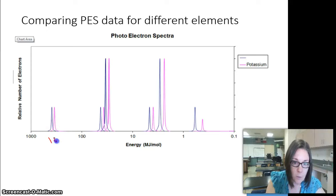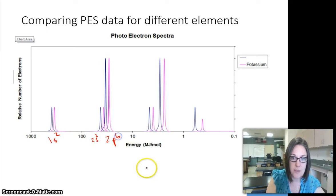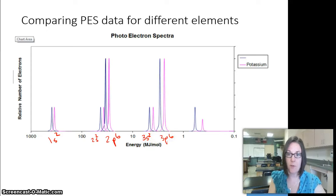This would be our 1S2. These two little peaks would be our 2S2, and then the two taller peaks would be the 2P6. These would be 3S2, and these are going to be 3P6. So far, they're very similar. When we get here to where we go to the 4S energy level, that's where things are a little bit different.